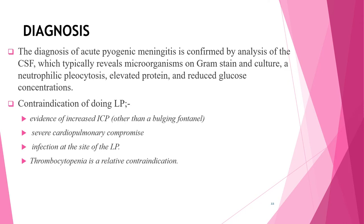Other contraindications to immediate lumbar puncture include severe cardiopulmonary compromise requiring prompt resuscitation, positioning that would further compromise cardiopulmonary function, and infection of the skin overlying the lumbar puncture site. Thrombocytopenia is a relative contraindication. If LP is delayed, empirical antibiotic therapy should be initiated. A head CT should be obtained to evaluate for increased ICP, since performing LP in the setting of elevated ICP could cause brain herniation.